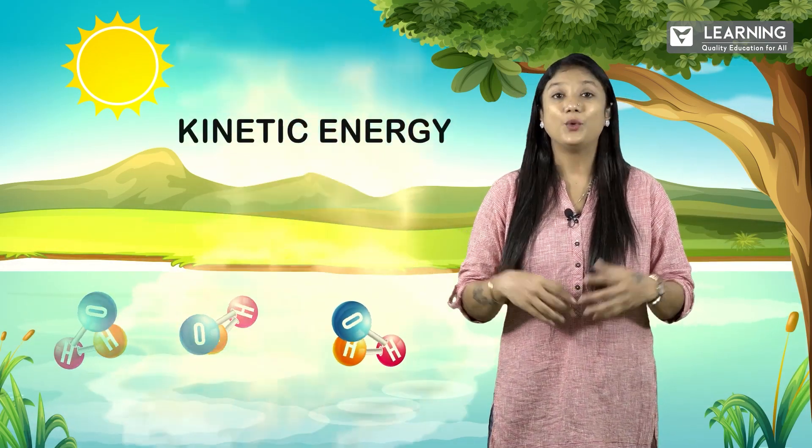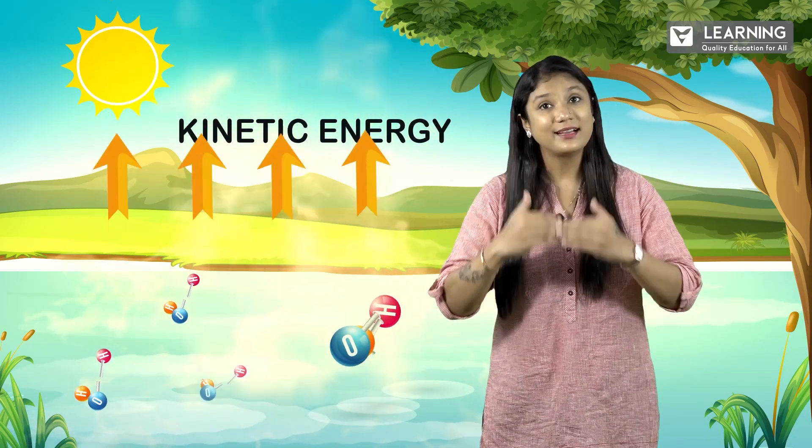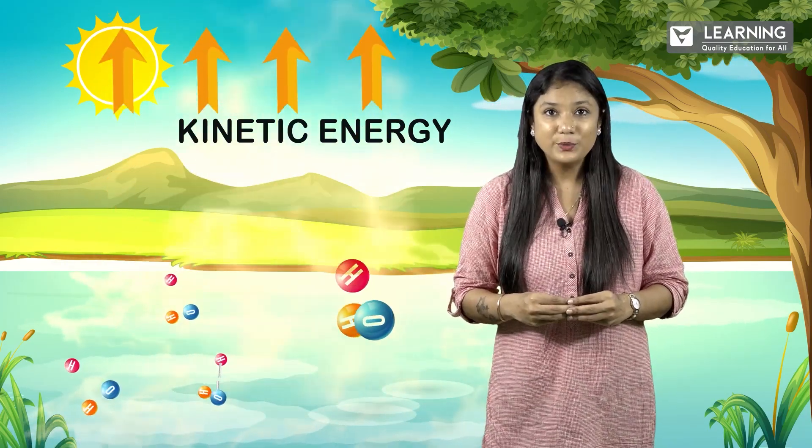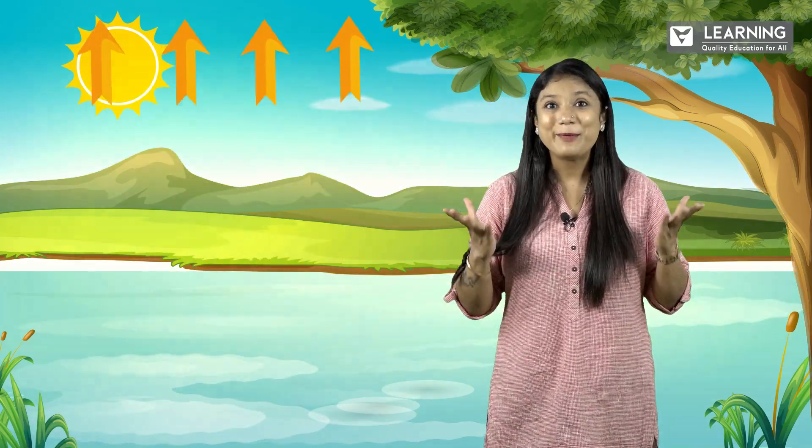When the sun rays fall and the wind blows on the surface of water, these molecules will get kinetic energy. When these molecules get higher kinetic energy, they get separated from the forces of attraction of other molecules in the water and get converted to vapour.